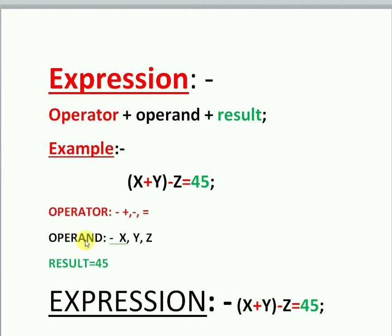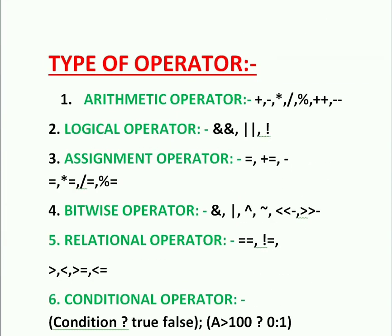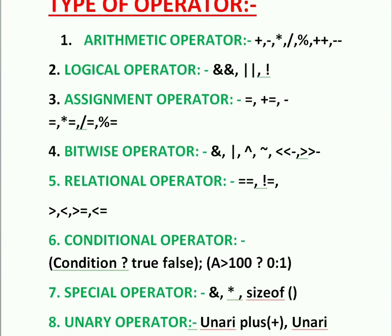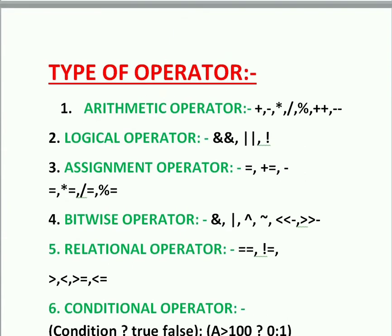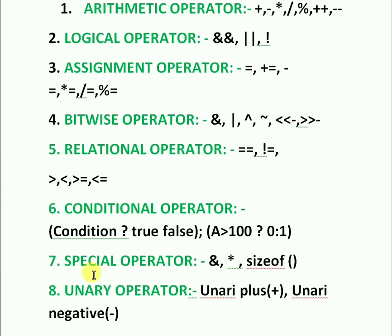So operator, operand, and result together form an expression. Now I am going to discuss about operators. There are eight types of operators: arithmetic operator, logical operator, assignment operator, bitwise operator, relational operator, conditional operator, special operator, and unary operator.